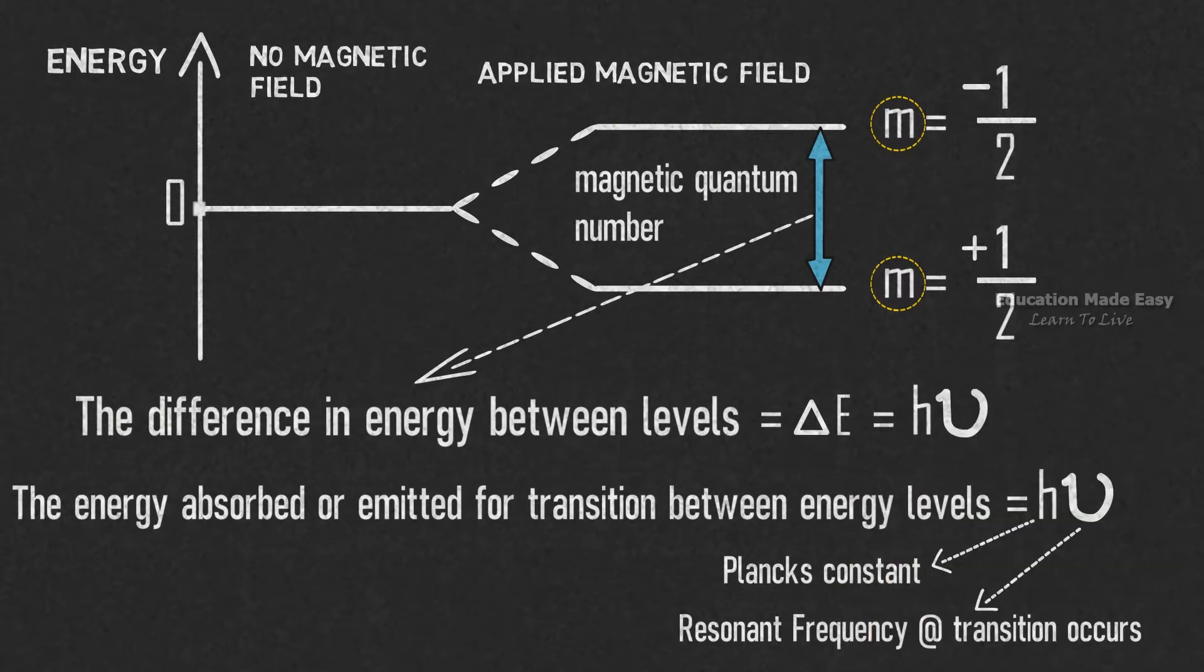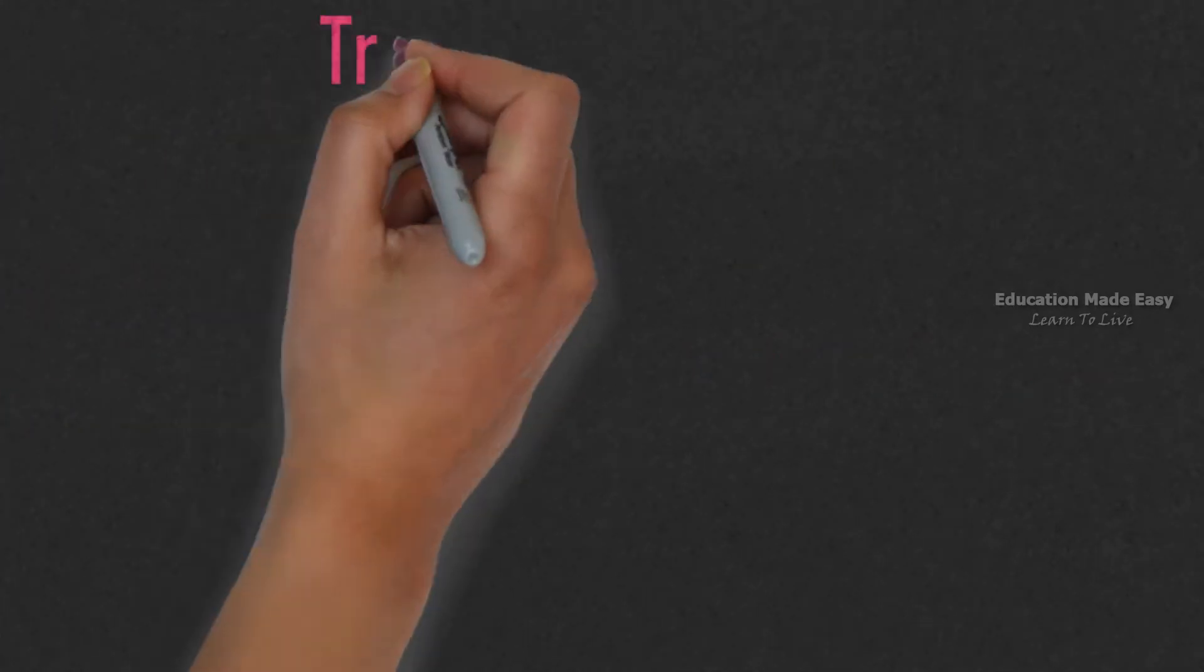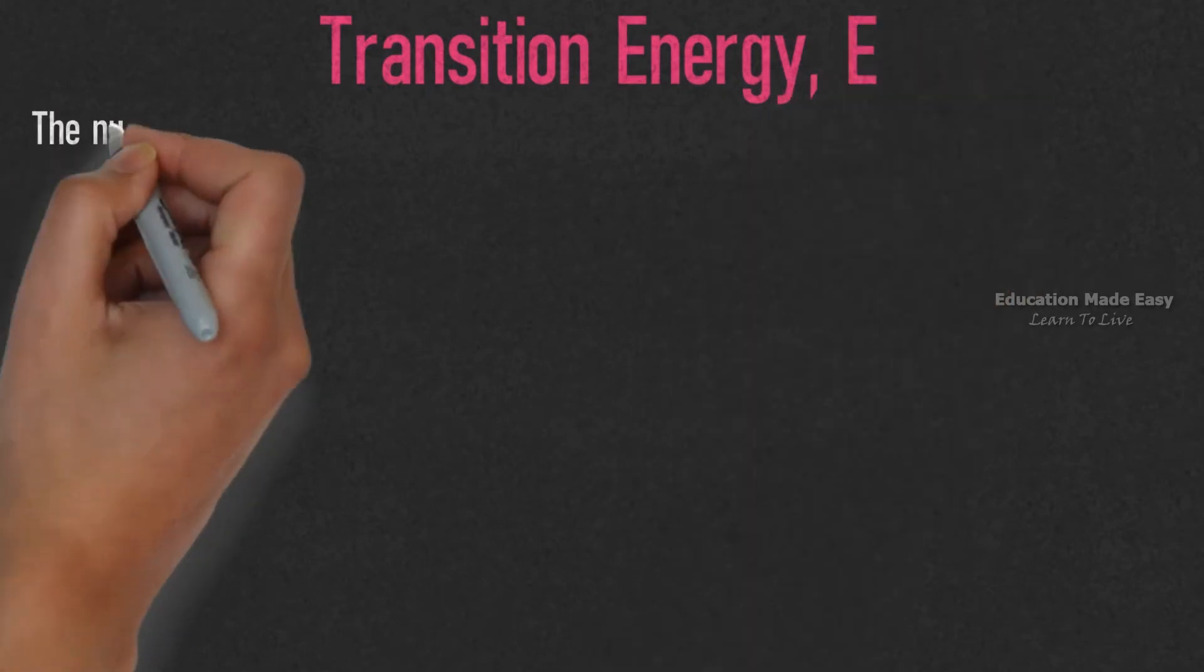Now let's discuss transition energy E. We know that the nucleus of an atom contains protons and neutrons.